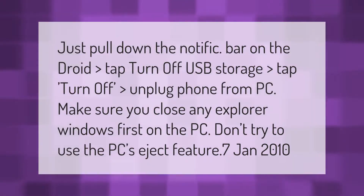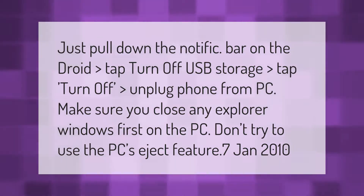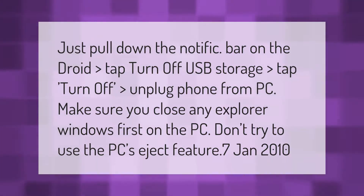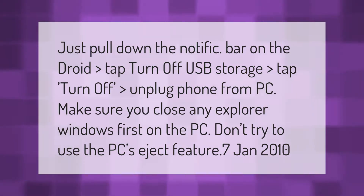To safely disconnect an Android phone: pull down the notification bar on the Android device, tap 'Turn off USB storage,' then tap 'Turn off,' and unplug the phone from the PC. Make sure you close any Explorer windows first on the PC. Don't try to use the PC's eject feature.